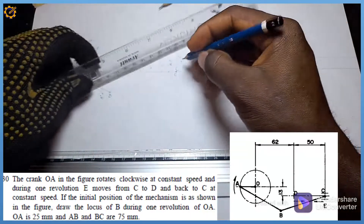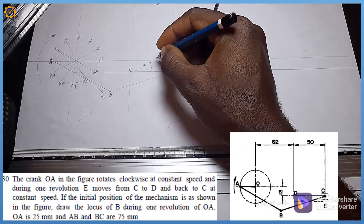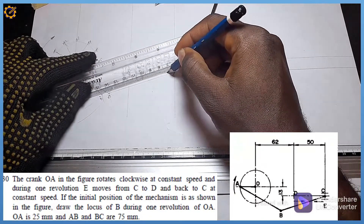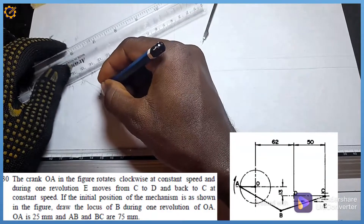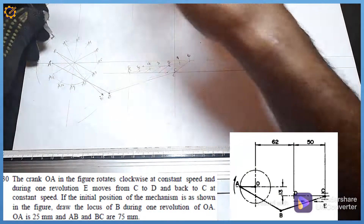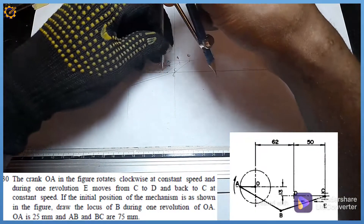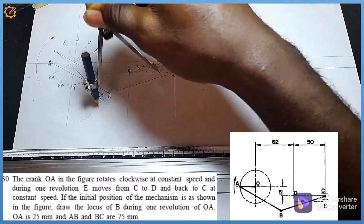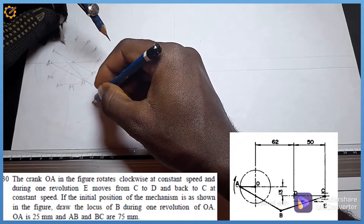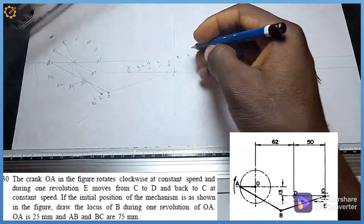With my ruler I join B1 to A1, then join C1 to B1, drawing faint lines. I label the slider divisions as C0 through C6. Moving to A2, I strike an arc from A2 with radius 75, and from C2 I strike the corresponding arc. They intersect to give me B2. I join B2 to A2 and C2 to B2 with faint lines.